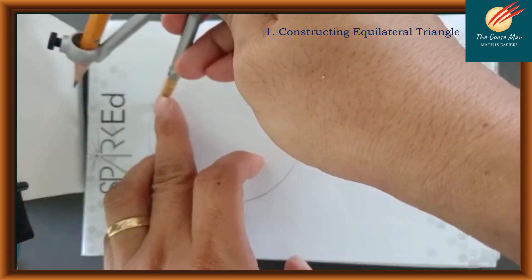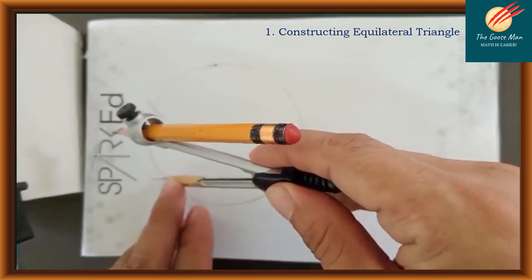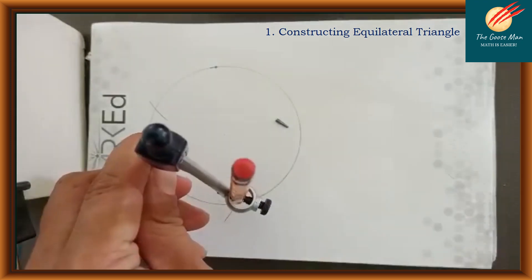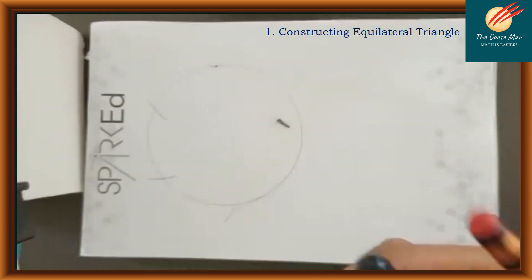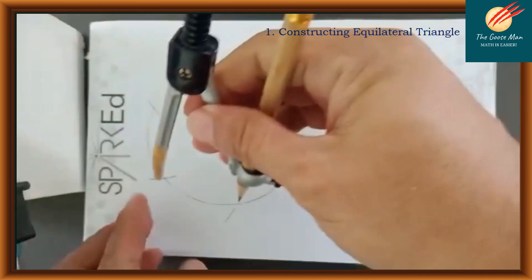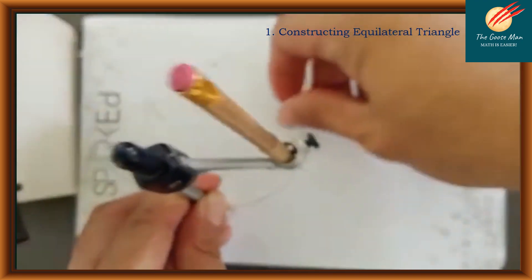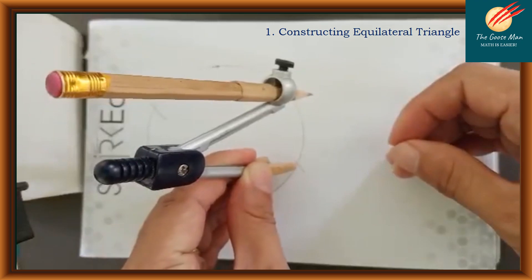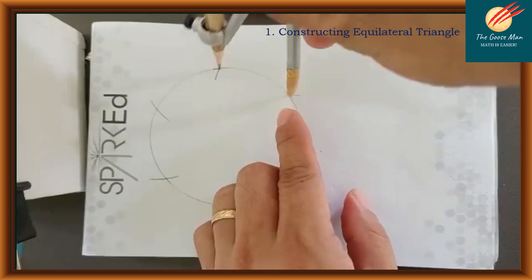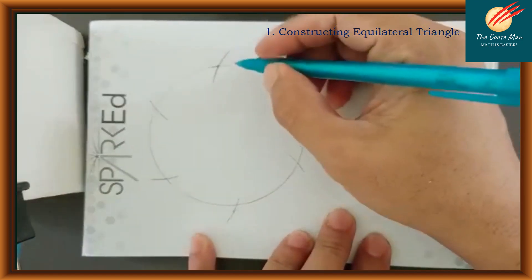Using the same compass opening, we will construct several arcs along the circle. So we have one, then use the same opening again to construct five more: two, three, four, five, and six.